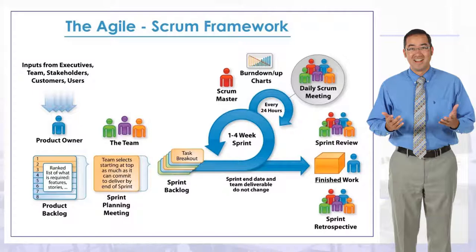A couple of new terms: the product backlog, the sprint planning meeting (a stand-up meeting), the sprint backlog, and iteration cycles of one to four week sprints. You can have a daily stand-up meeting called the daily Scrum call with your team members. The project manager typically does not lead this meeting — the Scrum master leads it. The PM takes notes, ensures everything is recorded, answers questions, and looks at issues.